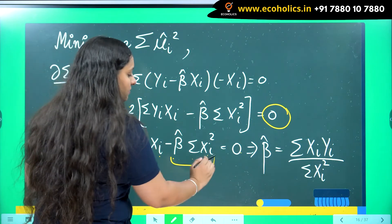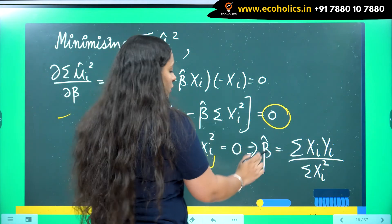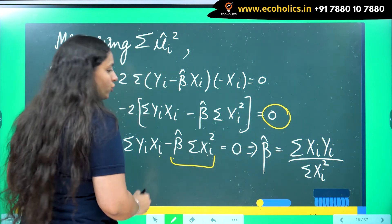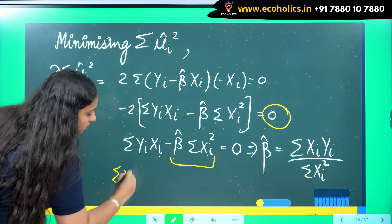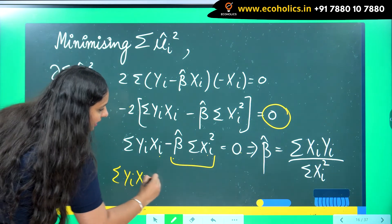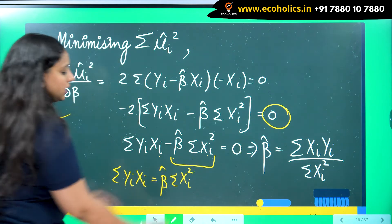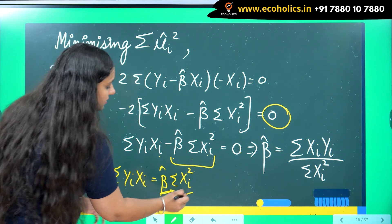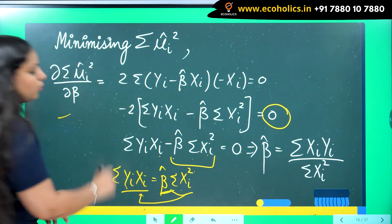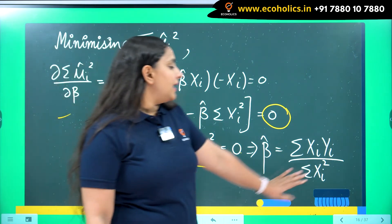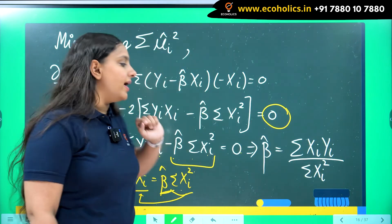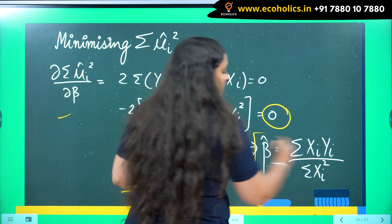Just take this term to the right hand side. If you do that, you will be getting summation yi xi equals to beta hat summation xi square. Now keep beta hat here and take the other term to the denominator. So I will get beta hat equals to summation xi yi upon summation xi square.